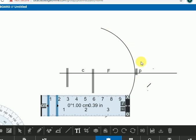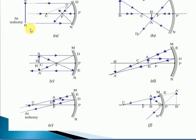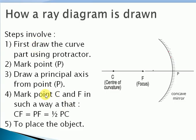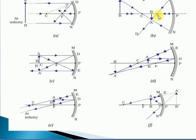For all cases of a concave mirror, we proceed with the first four steps compulsorily. The image formation of a concave mirror depends on the distance of the object placed from the mirror, so the fifth step is placing the object on the principal axis at different positions.